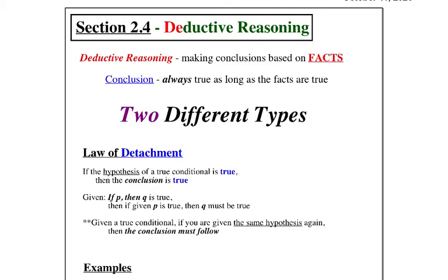Hey there geometry friends. As we're going through chapter 2, we're getting closer and closer to proofs. You see a lot of logical reasoning, especially in sections 2.2 and 2.3, and in 2.4 we go further with more types of reasoning as we get closer to writing proofs — because we want you to think logically in geometry and not just study shapes.